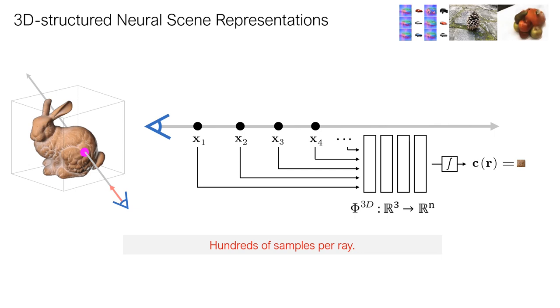For volumetric rendering methods, which produce the highest quality images, because of the costly sampling, a single image can take more than 30 seconds to render. Since rays must be re-rendered many times during training, this makes the training process time and memory intensive as well.